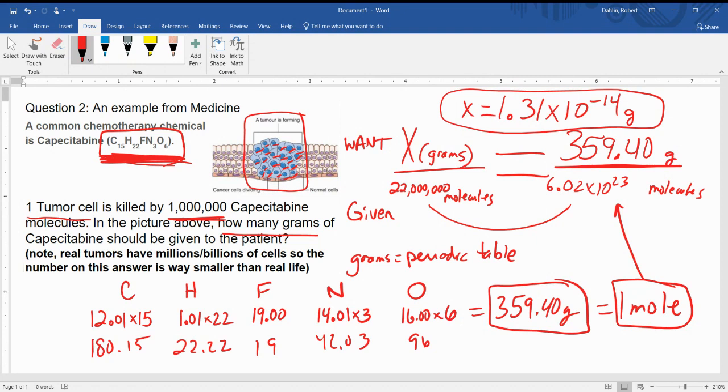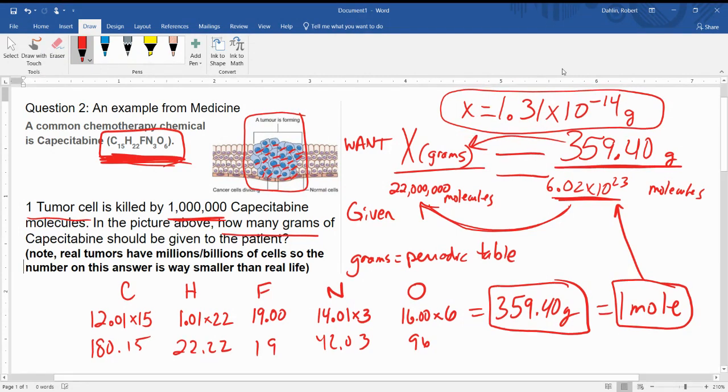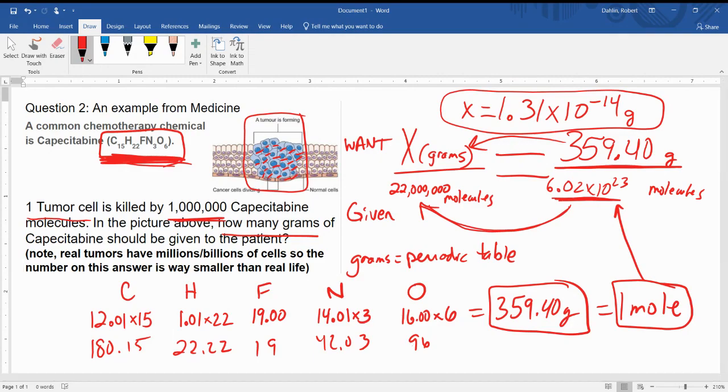Which means our answer on this side is also going to be really tiny compared to 359.41. It's just a ratio. 359.41 divided by 6.02 times 10 to the 23rd. If you did that on your calculator, you get a number. If you took 1.31 times 10 to the negative 14 and divided it by 22 million, you would end up getting the exact same number. That's why a proportion works. It's trying to say, we're going to take this number which we know to be true and scale it way down to this number. Well, if we do that, what does this number scale down equal to? Turns out, 1.31 times 10 to the negative 14.